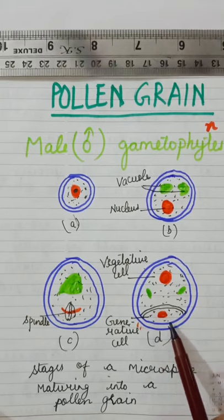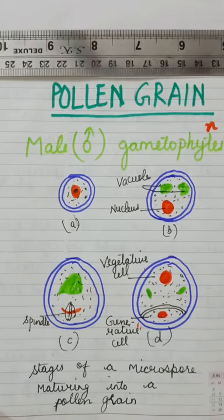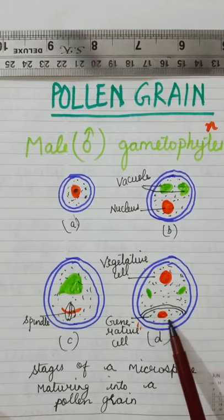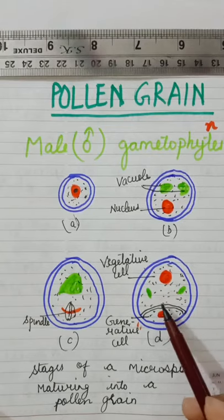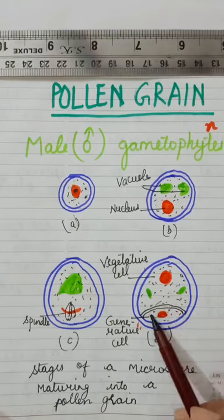This is the wall of microspore. Generative cell loses its contact with the wall of microspore and comes to lie free in the cytoplasm. This cell finally lies freely in the cytoplasm - this cell comes this side.